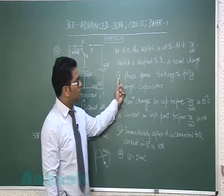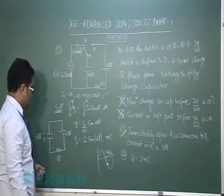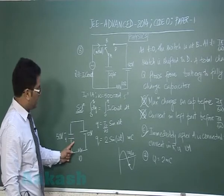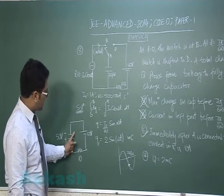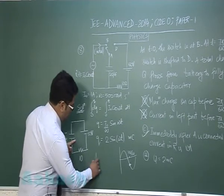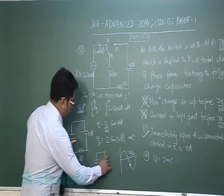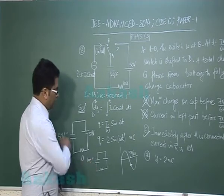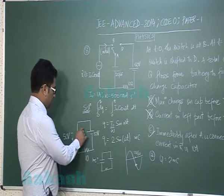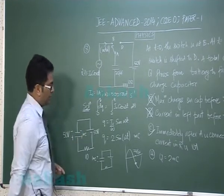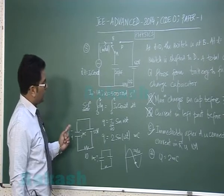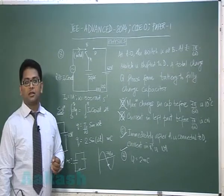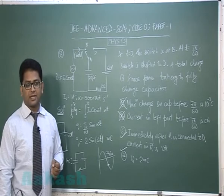Capital Q is the total charge flowing from the battery to fully charge the capacitor. When fully charged, the capacitor holds plus 1 millicoulomb on one plate and minus on the other. Currently it holds minus 1 millicoulomb, so the total charge that flows from the battery is 2 millicoulombs — this is correct. That concludes question number 8.